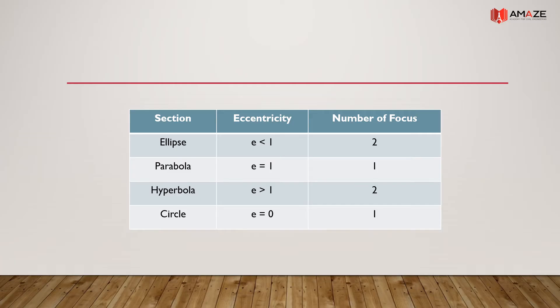For a circle, eccentricity is equal to 0 and the number of foci is 1. A circle is a special case of an ellipse, where the two foci coincide at the same point.